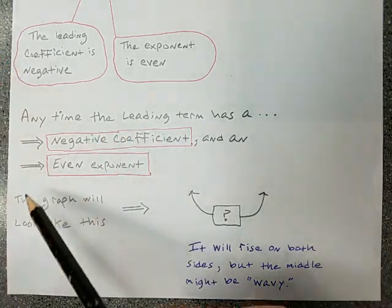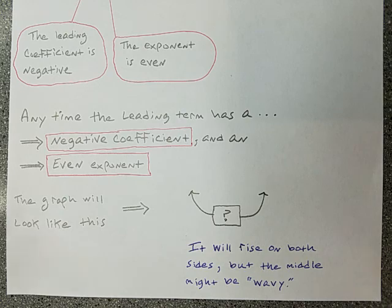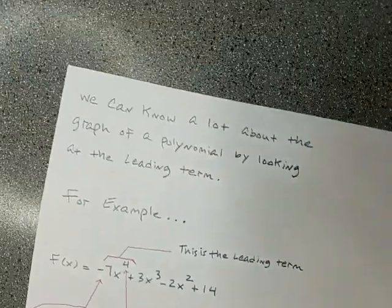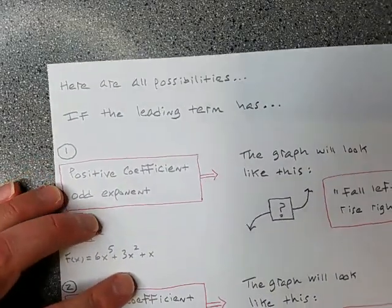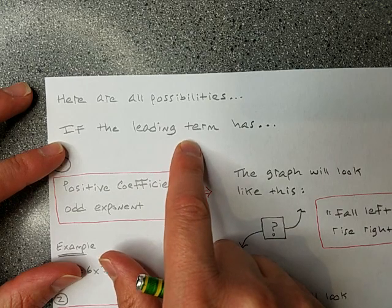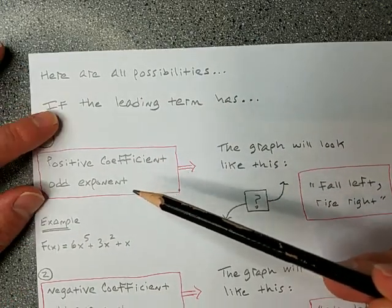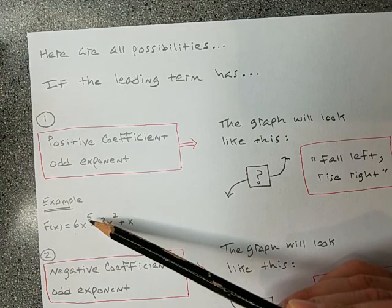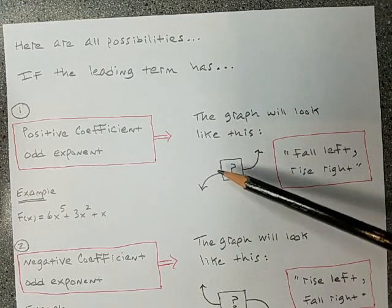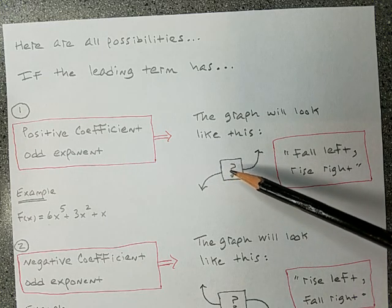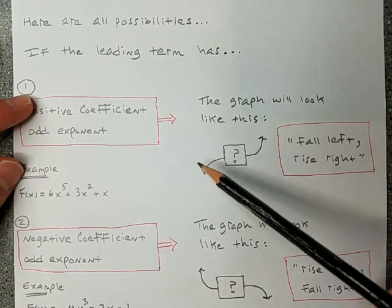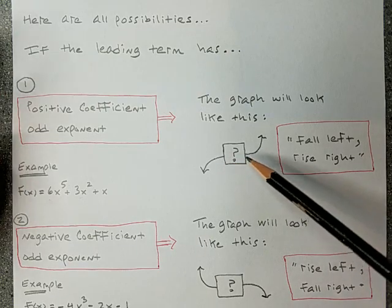Let me summarize everything you could tell from the leading term in one place. Here are every possibility. If the leading term has a positive coefficient and an odd exponent — like a coefficient of 6 and an exponent of 5 — then the graph will fall on the left and rise on the right. The middle might wave up and down, but I know it will fall on the left and rise on the right.